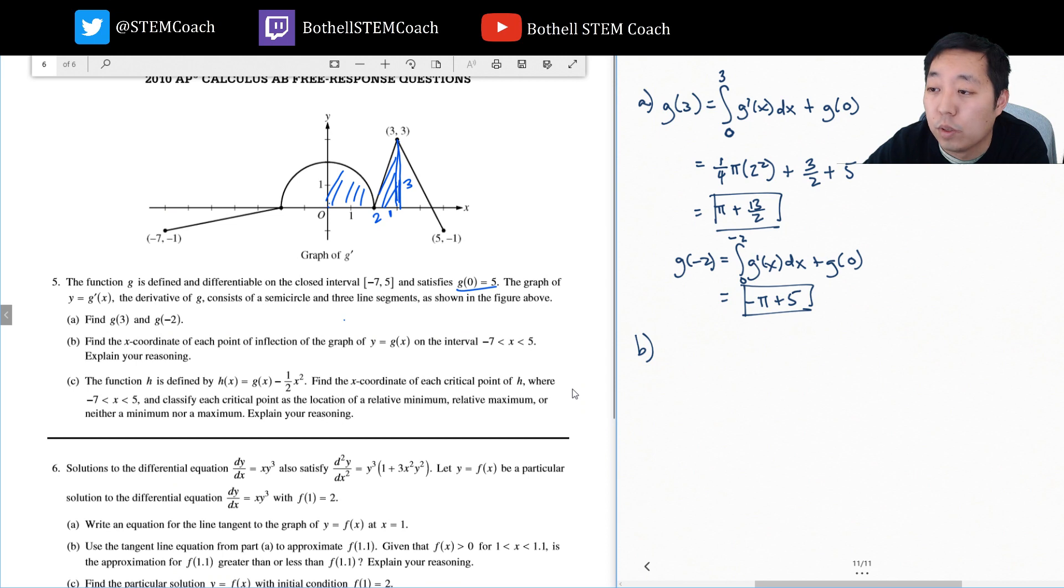Part B: Find the x coordinate of each point of inflection on the graph y equals g of x on the interval. What is a point of inflection?